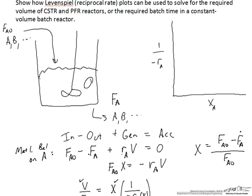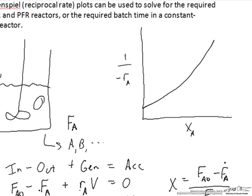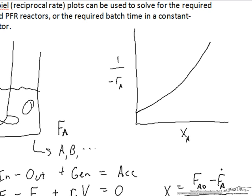And so that plot will often look something like this: the rate tends to go down as we convert more and more of our reactants to products, because there are fewer reactants to react. And so therefore the reciprocal rate actually goes up with conversion.